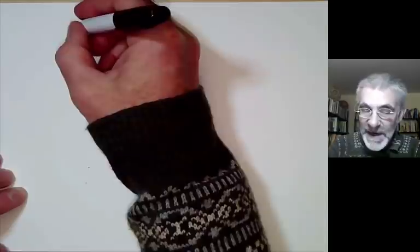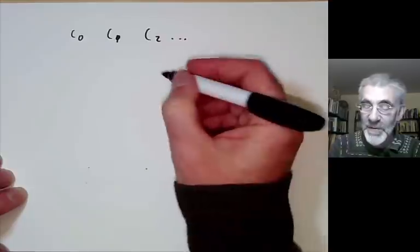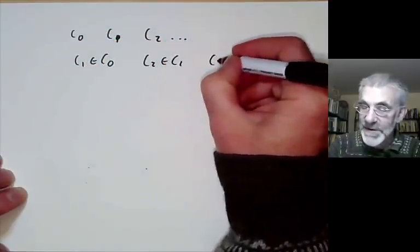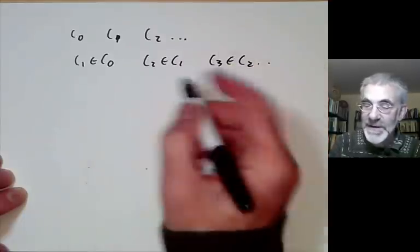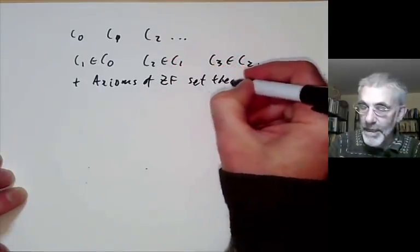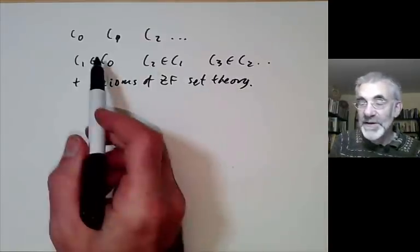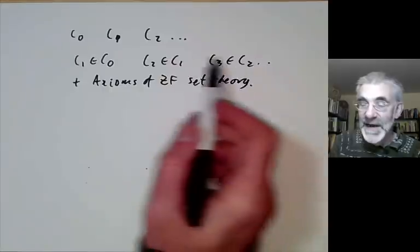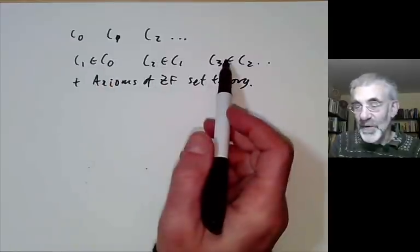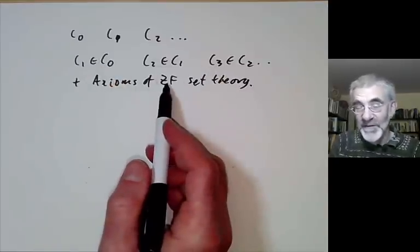What we do is take the language of set theory and add new constants c0, c1, c2, and so on, then add axioms saying c1 ∈ c0, c2 ∈ c1, c3 ∈ c2, and so on. We take these axioms plus the axioms of Zermelo-Fraenkel set theory, and notice that if ZF is consistent, then so is ZF with these added axioms, because any proof leading to a contradiction can only use a finite number of these axioms, and ZF plus a finite number of them is obviously consistent if ZF is.